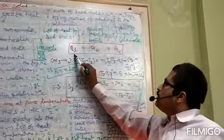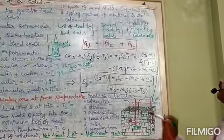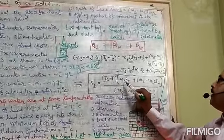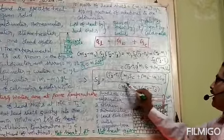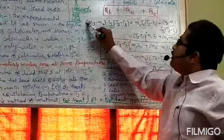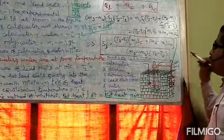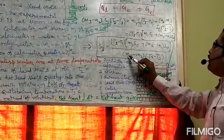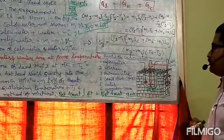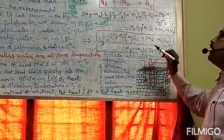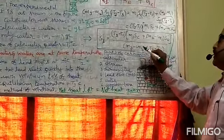Now we want SL. Specific heat of lead shots SL is equal to (T3 − T1) × [M1·SC + (M2 − M1)·SW], divided by (M3 − M2) × (T2 − T3). This is the formula for determination of specific heat of the solid lead shot.